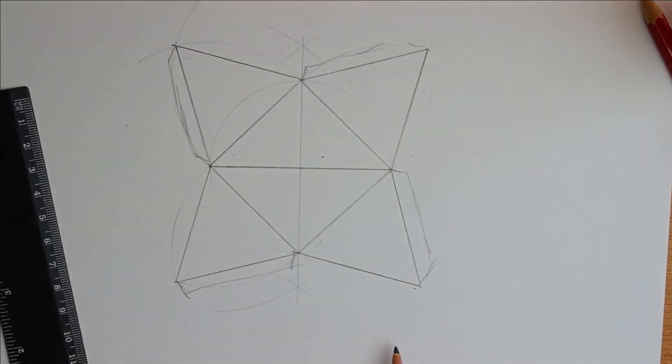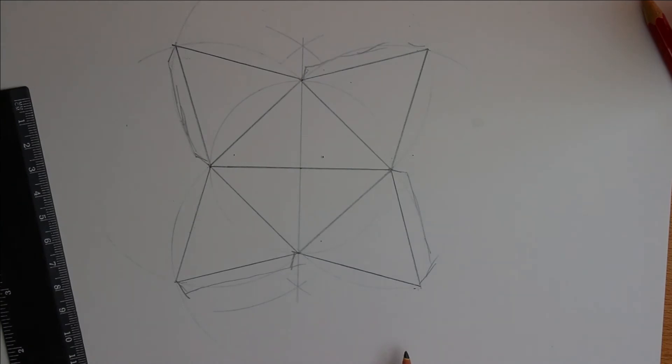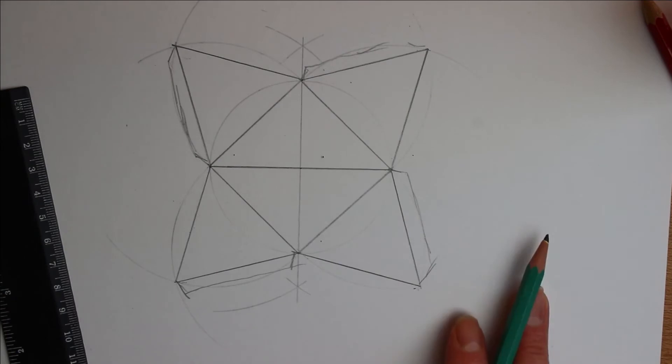I'll scan this and leave a link below so you can actually download and print out this net. But there you go, the net of the square based pyramid. Obviously you'd need two of these to make the octahedron.